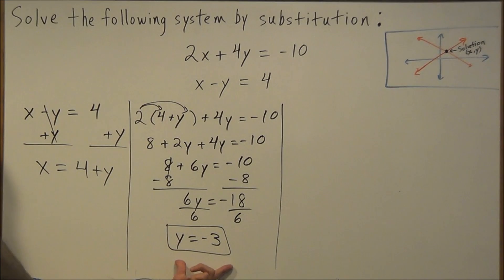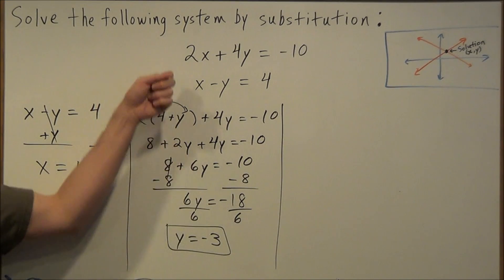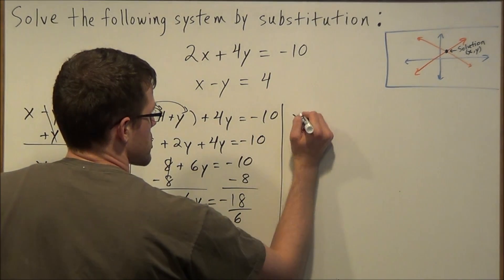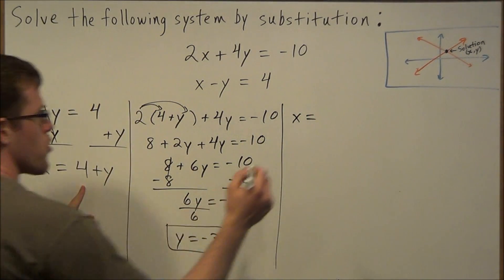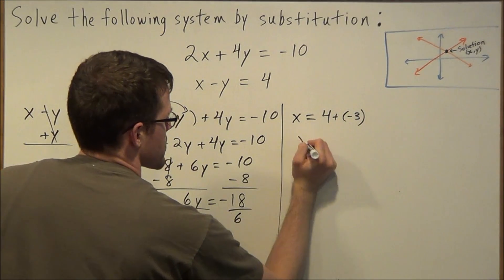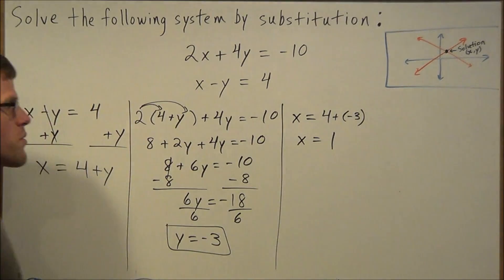The key though to make this simple is to plug in to one of the original equations. But you should plug into the one that we solved for in the first step here. If we plug into this, notice it already says x equals. So then we'll have x equals 4 plus y, which tells us x is equal to 1.